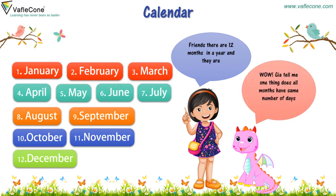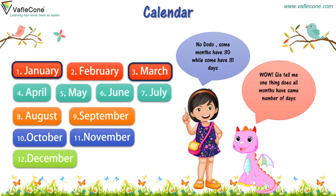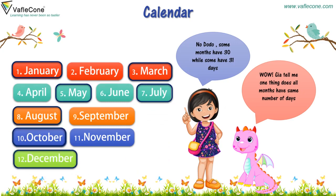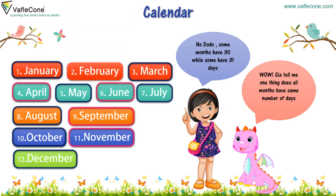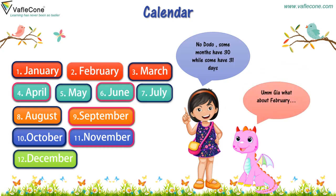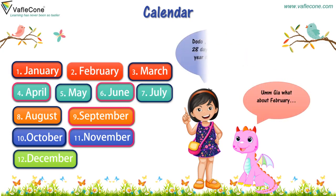Does all months have the same number of days? No, some months have 30 while some have 31 days. January, March, May, July, August, October, and December have 31 days. April, June, September, and November have 30 days. What about February? February has 28 days, and in a leap year it has 29 days.